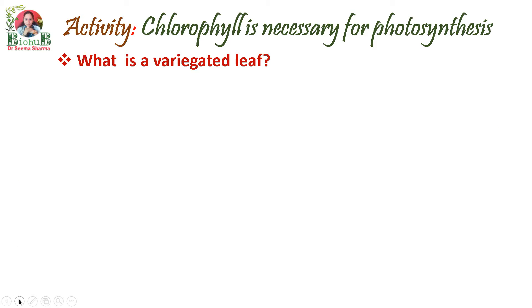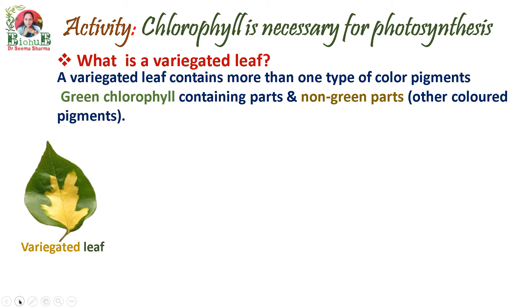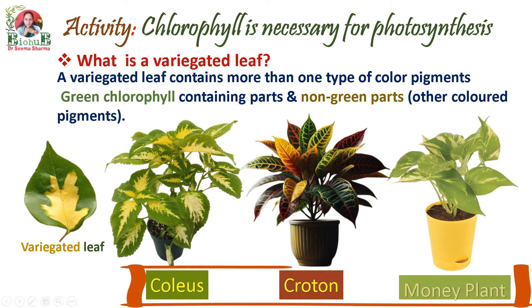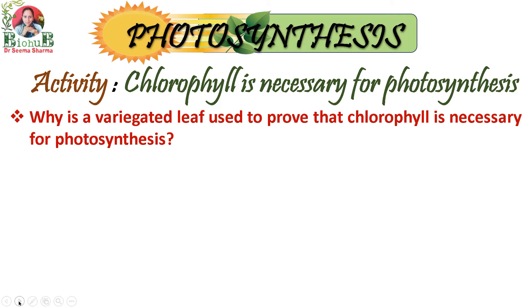What is a variegated leaf? A variegated leaf contains more than one type of color pigment. It may have green chlorophyll-containing parts and non-green other-pigment-containing parts. Few of the plants where you must have come across such leaves are Coleus, Croton, and Money Plant.